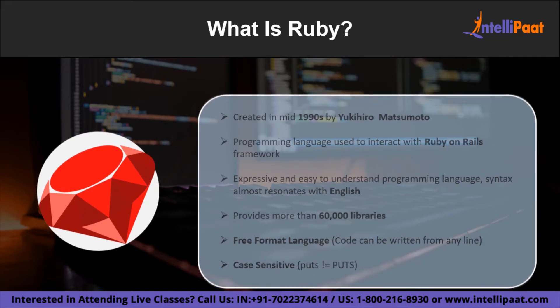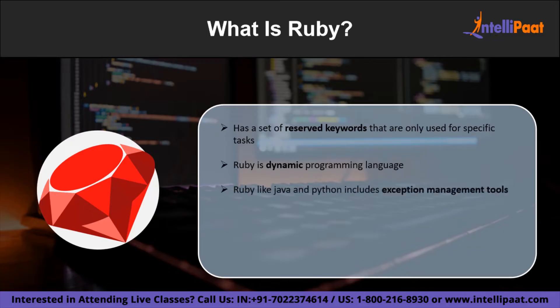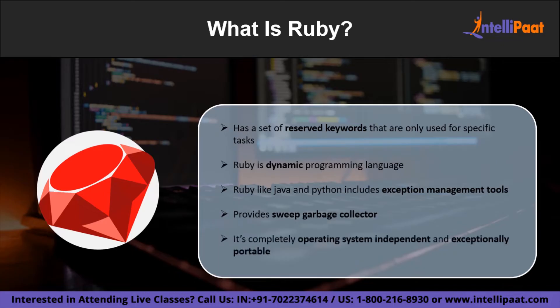Ruby is a completely free-format language, which means you can start coding from any line or column. It also has a set of reserved keywords used only for specific tasks. Ruby includes exception management tools like Java and Python, has a real mark-and-sweep garbage collector, is completely operating system independent, and is exceptionally portable.